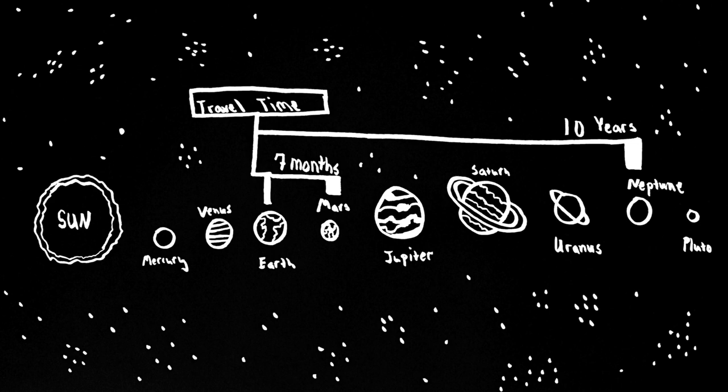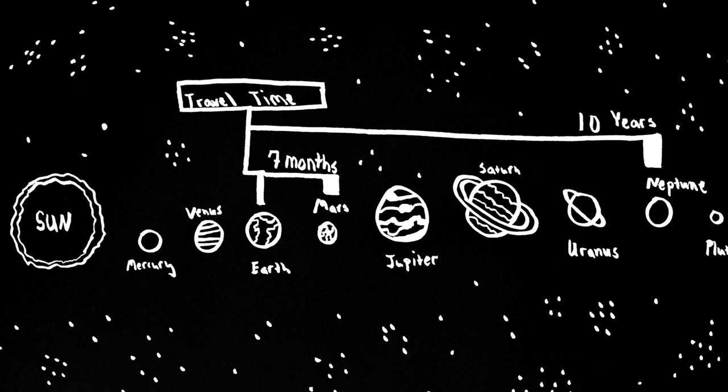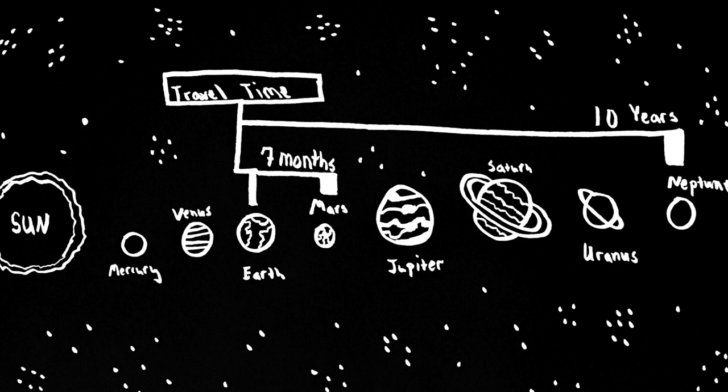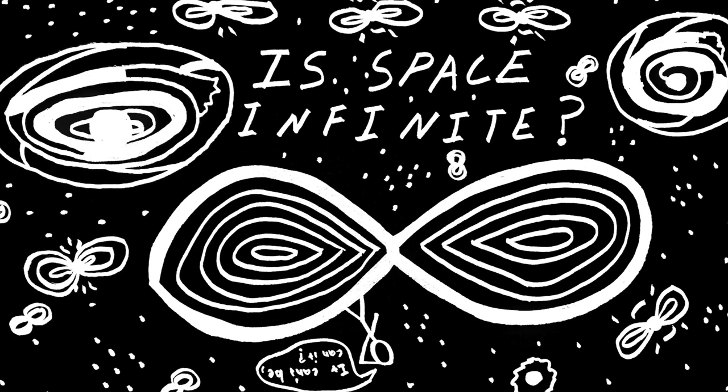To reach the last planet in our solar system, Neptune, it could take a decade or more depending on the technology used to get there. But these are really forgiving numbers when we start to talk about space outside our solar system. Space is so expansive in all directions, in fact, that we literally have no idea how big it actually is.